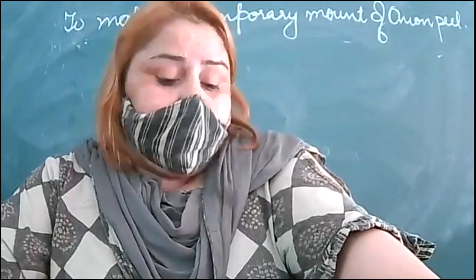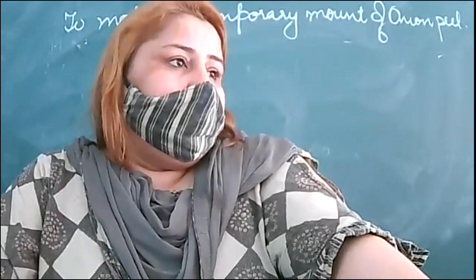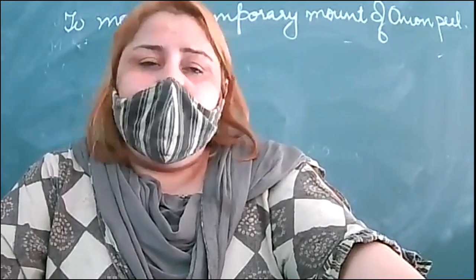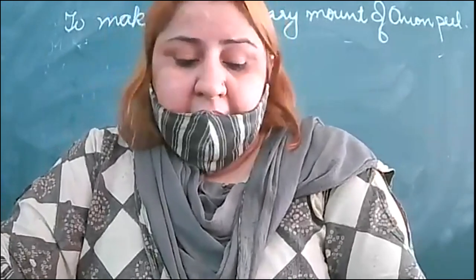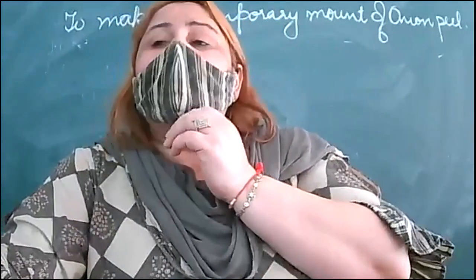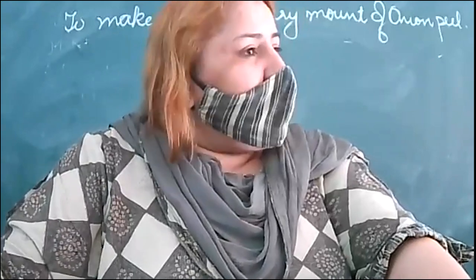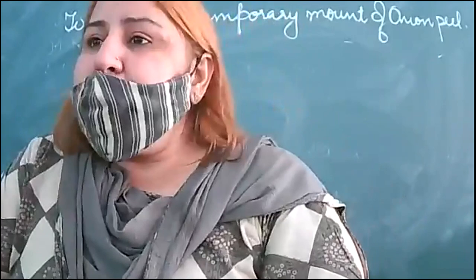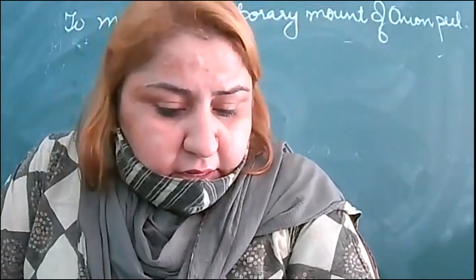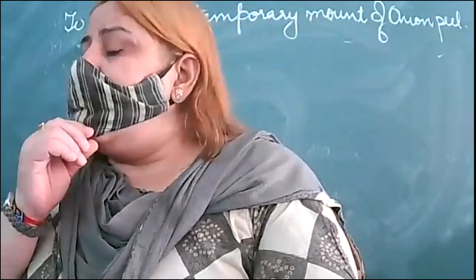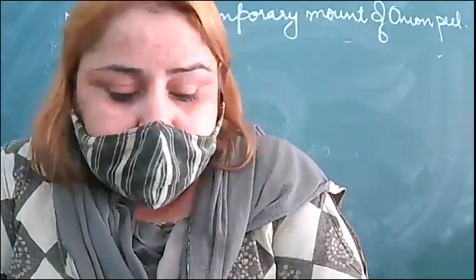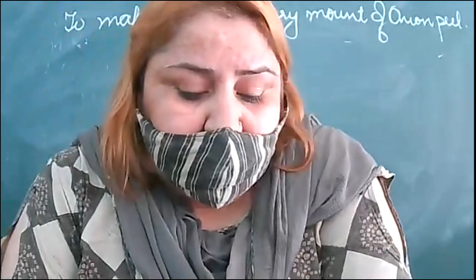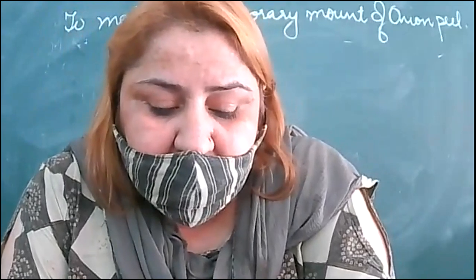Next odd-one-out question. Options: Chlamydomonas, Paramecium, bacteria; fungi, plants, animals; or sperm, neuron, amoeba. The answer is fungi, plants, animals — they are multicellular. Sperm, neuron, and amoeba are all human cells of irregular shape.